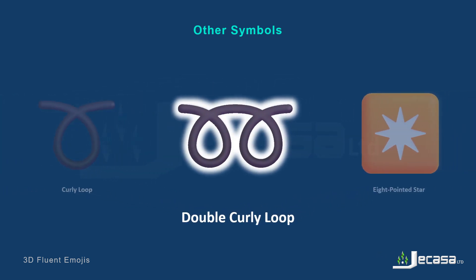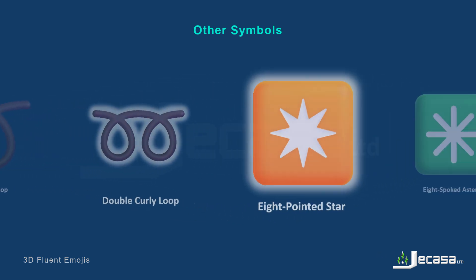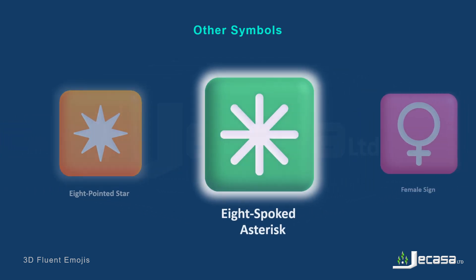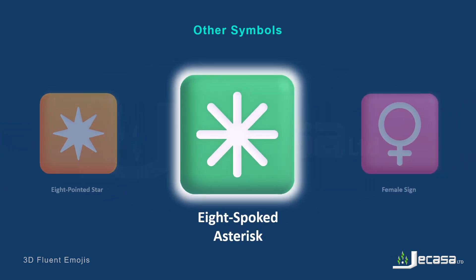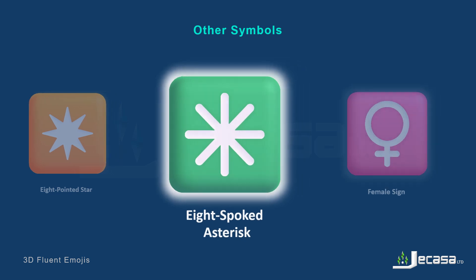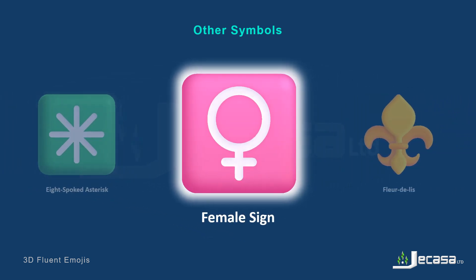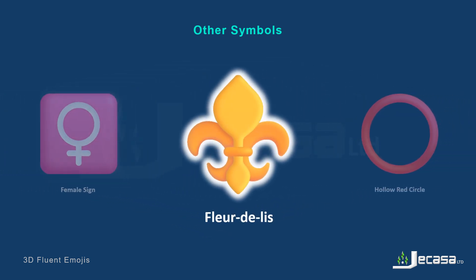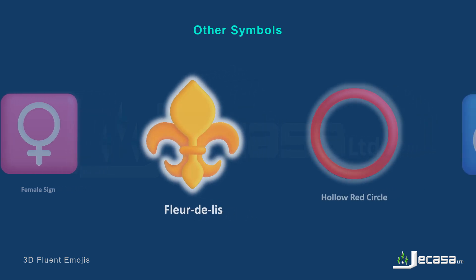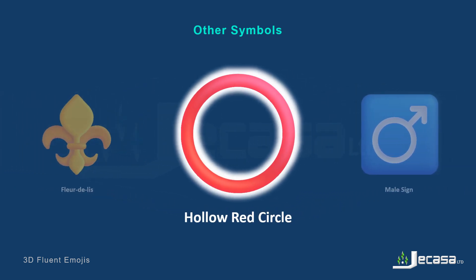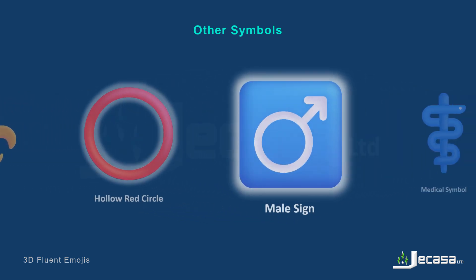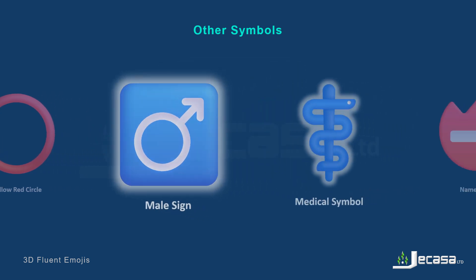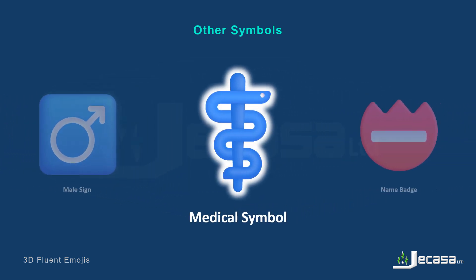Double curly loop, eight pointed star, eight spoked asterisk, female sign, fleur-de-lis, hollow red circle, male sign, medical symbol.